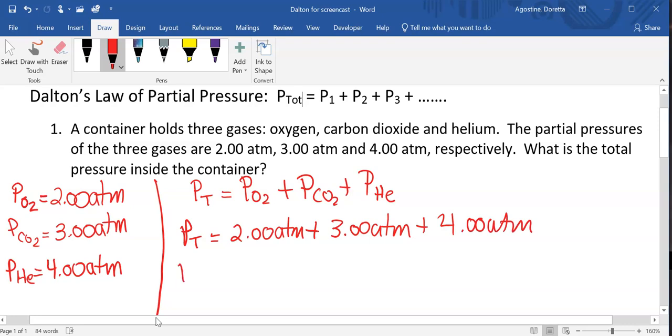So our P total is going to be 2 plus 3 is 5, plus 4 is 9. We have to put the 0.00 because we need three sig figs, and our unit is atm. So that would be how we would solve the first type of problem, which is just a straight-up sum of the partial pressures.